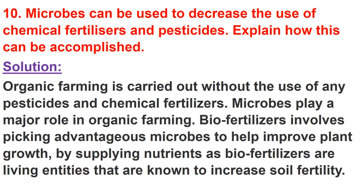NCERT question number 10: Microbes can be used to decrease the use of chemical fertilizers and pesticides — explain how this can be accomplished. Chemical fertilizers and pesticides can be replaced with biofertilizers and biocontrol agents with the help of microbes. Organic farming is carried out without the use of any pesticides and chemical fertilizers.